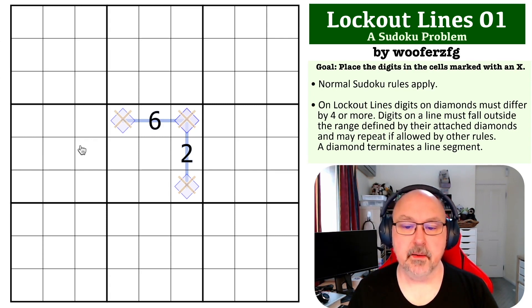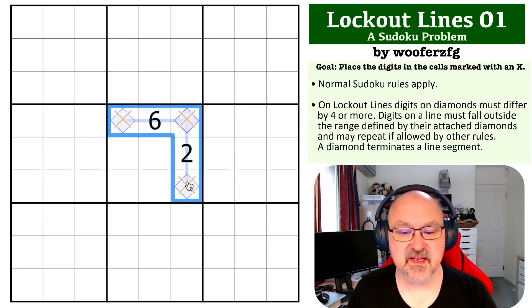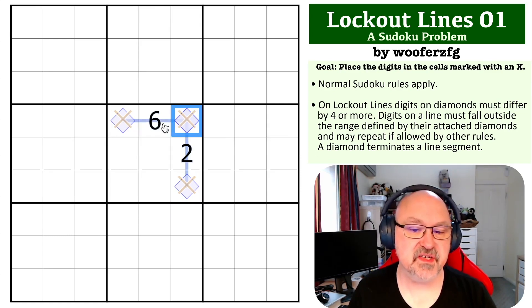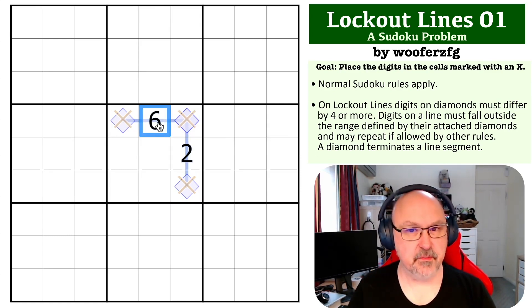Okay, so yeah, all of this is basically just on these lines. And the thing to think about, of course, is what locks out a six from a line. Because the digits on the diamonds have to be at least four apart,